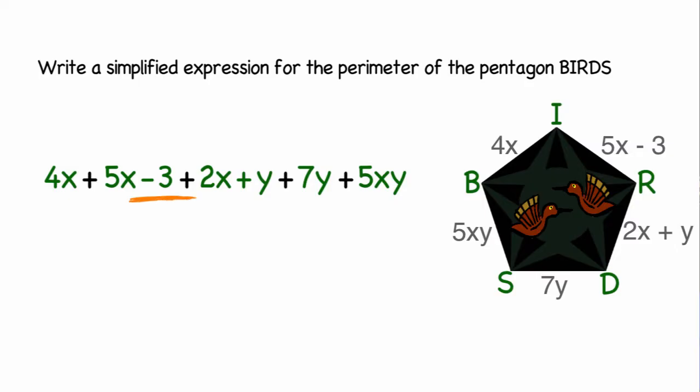Next is always a good idea to change the subtraction to adding the opposite. After we've done that, we can start working on combining like terms. Remember that like terms have the exact same variables. When looking at the different terms, we notice that several of them have just the variable x. So I will circle those.